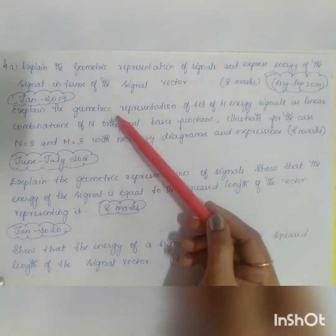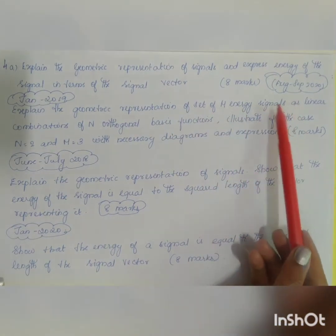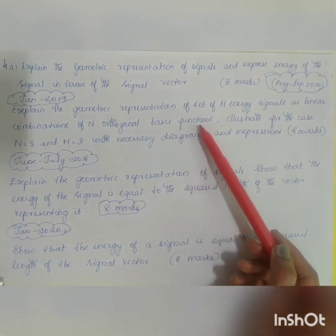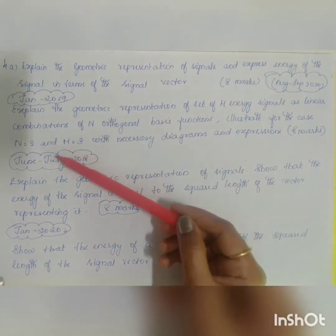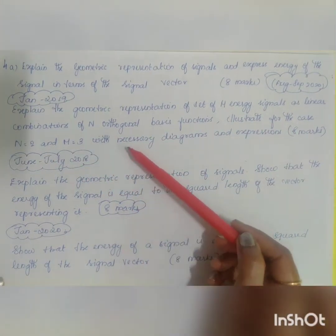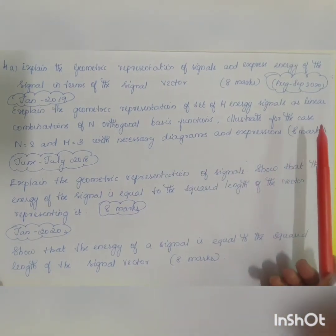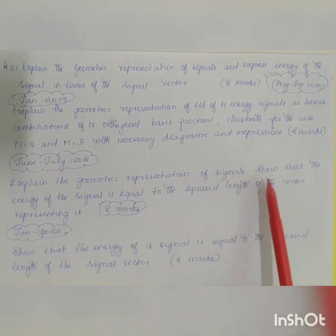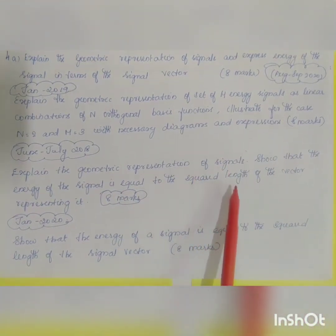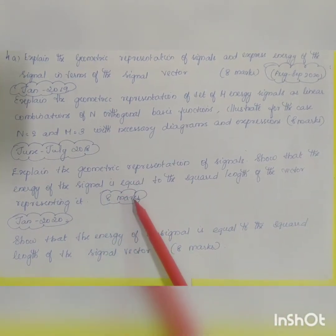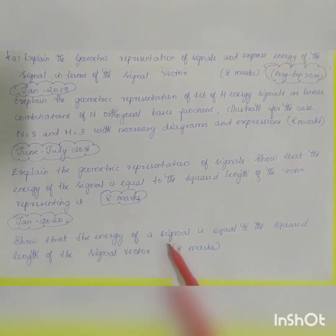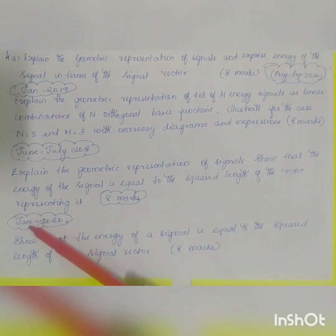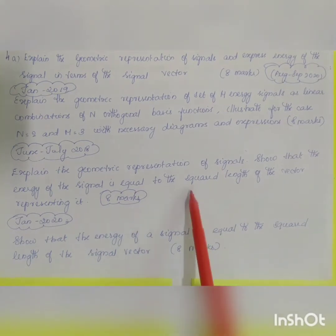Another question asks to explain the geometric representation of a set of M energy signals as a linear combination of N orthogonal basis functions, and to illustrate for n=2 and m=3 with neat diagrams and expressions — asked for eight marks from January 2019. Further questions ask to show that the energy of the signal equals the squared length of the signal vector, asked for eight marks from June/July 2018 and January 2020.